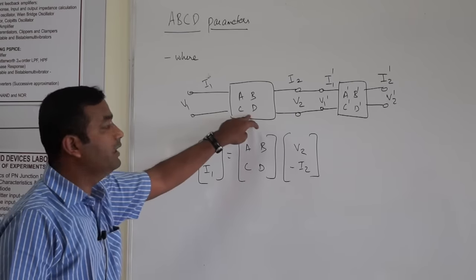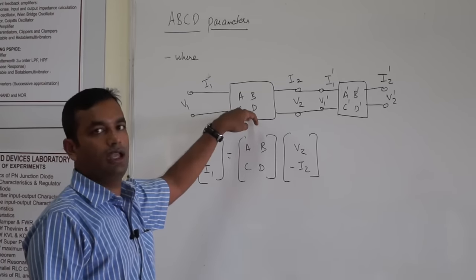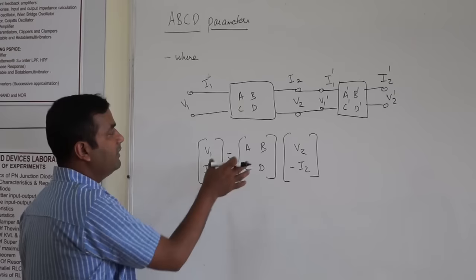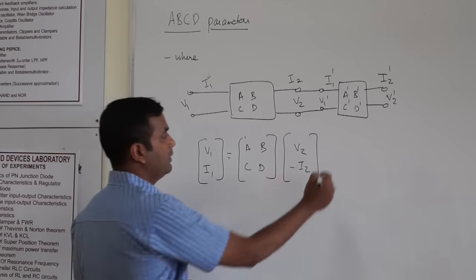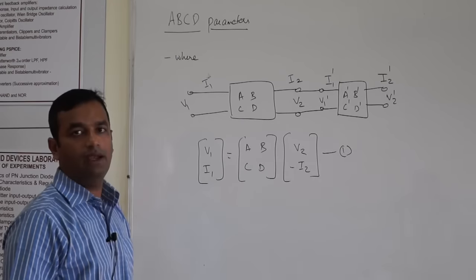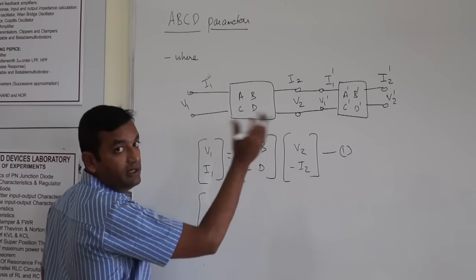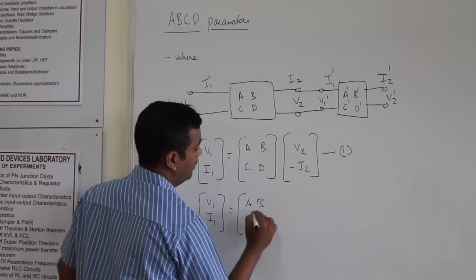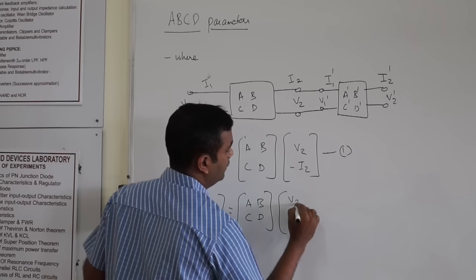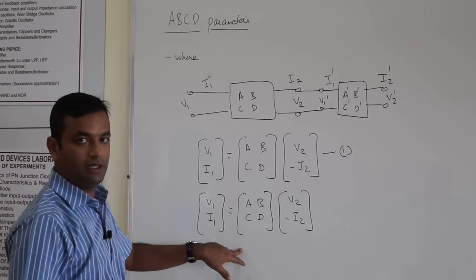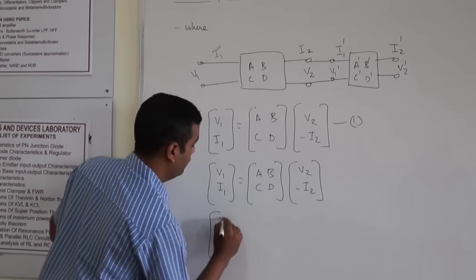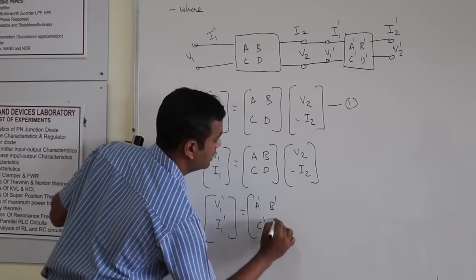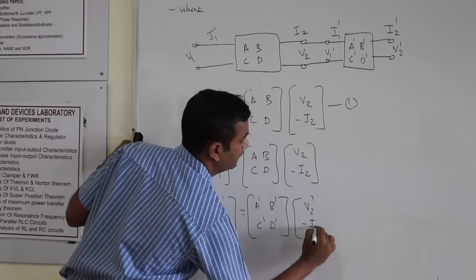This is the ABCD parameter of a single two-port network. Suppose we need to find out the ABCD parameters of the cascaded network. The ABCD parameter of the first network is: V1, I1 equals ABCD times V2, minus I2. Let us write the ABCD parameter of the second network: V1 dash, I1 dash equals A dash, B dash, C dash, D dash times V2 dash, minus I2 dash.